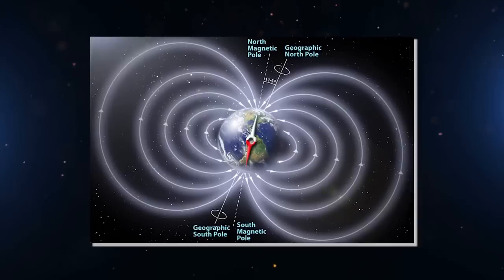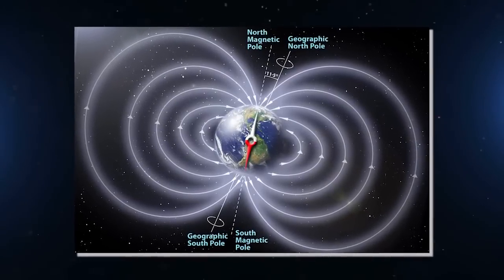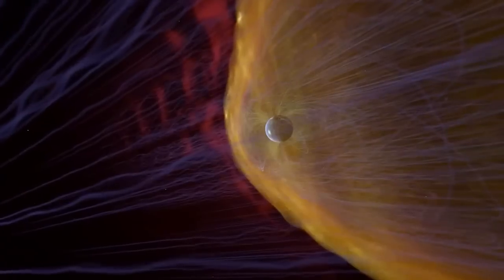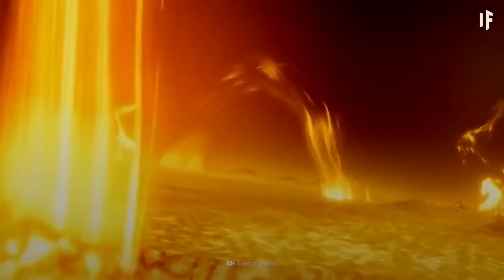the World Magnetic Model is a representational model that is updated every five years and helps navigation systems match up with the real world. The last update came out in 2015, so this one is a little early. This is done on purpose to try to keep up with how fast the magnetic north is moving.